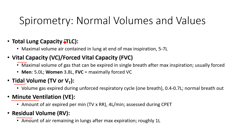Total lung capacity is the maximum amount of air contained in the lungs at the end of a maximum inspiration — how much air can you hold in your lungs? Vital capacity is how much air you can breathe out after maximum inspiration — usually it's a forced maneuver. You may see this interchangeably as vital capacity or forced vital capacity (FVC), and FVC is what's done most often during spirometry testing.